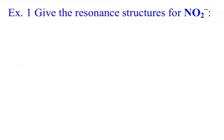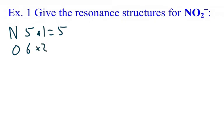Now let's take a look at a couple of examples. The first one is the nitrate ion. Nitrogen has five valence electrons; oxygen has six. Since there's one nitrogen, that's five, and three oxygens at 12 gives us 17. But because of the charge, we must add one electron, so our total valence number is going to be 18.